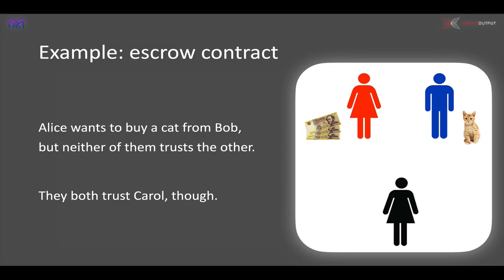The contract we're thinking about here is what's called an escrow contract. Alice wants to buy a cat from Bob. Alice has the money, Bob has the cat, but neither of them trusts each other. Alice puts the money in and Bob doesn't give her a cat, so she loses her money. Bob hands the cat over to Alice and she doesn't pay him, so he loses his cat. How can they ensure, when there's a lack of trust, that the contract is executed properly?